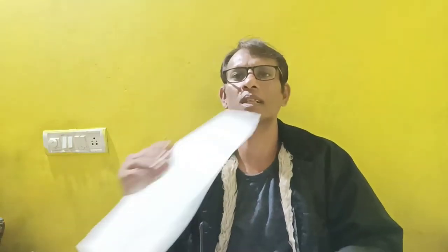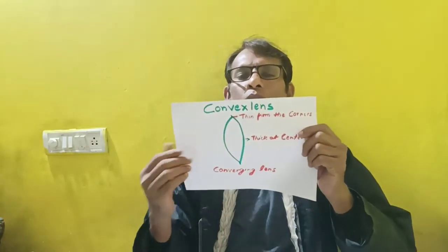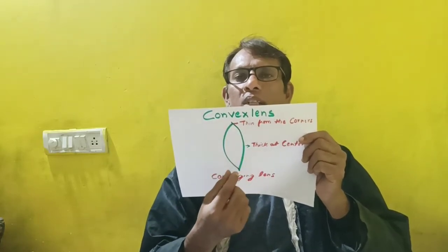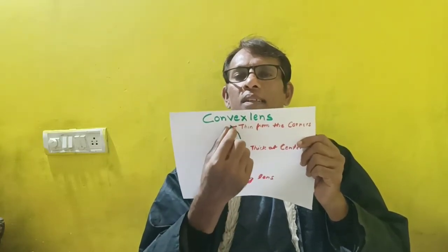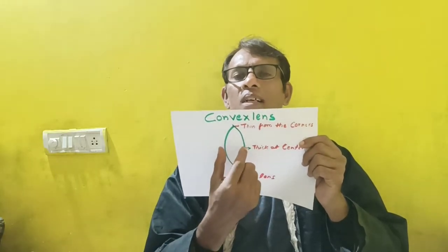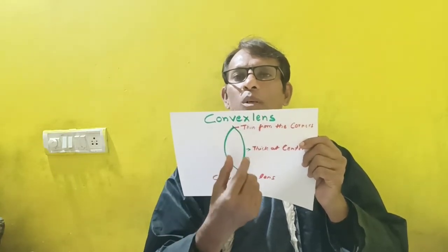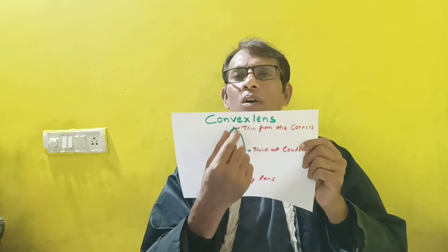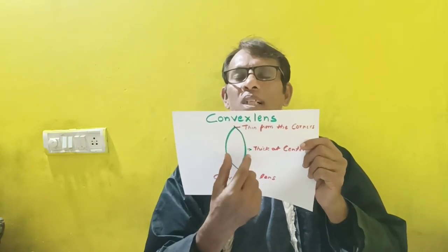Let us understand the convex lens. What are the properties of a convex lens? We can see here — this is the convex lens. It is in this shape: it is thinner at the corners. The edges are thinner and thicker at the middle. It is a double convex lens — thinner at the edges or corners and thicker at the middle.